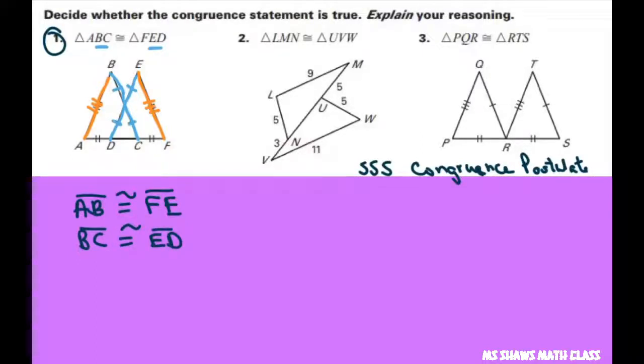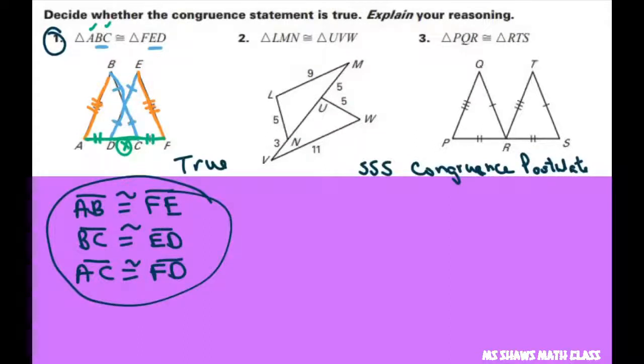And finally, we have to do AC. I'm going to put an X here. So we have AC and FD. And those two are congruent because these two match up and then they both have the X. So that's going to be AC is congruent to FD. So this is true. And explaining our reasoning, that's our reasoning. By the side-side-side congruence postulate, all the sides are congruent.